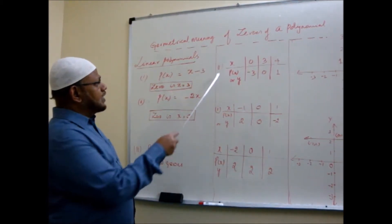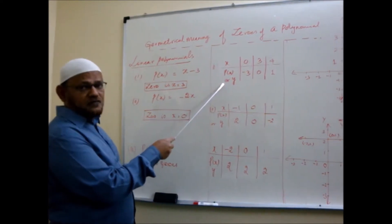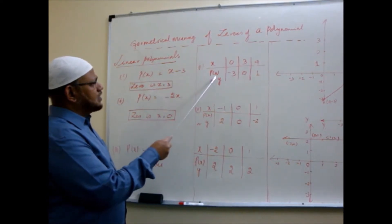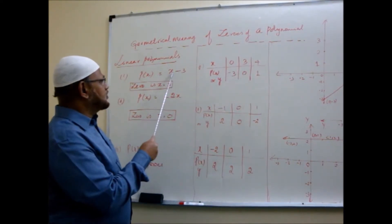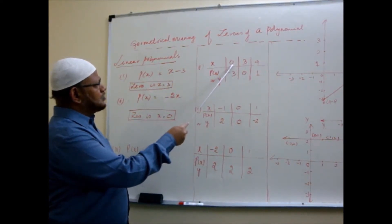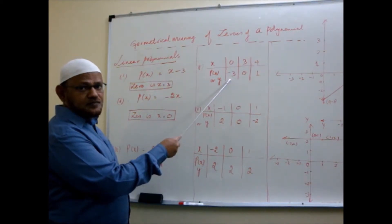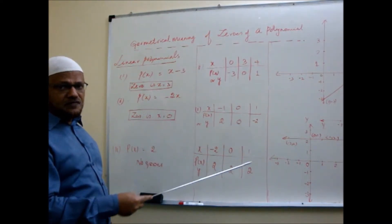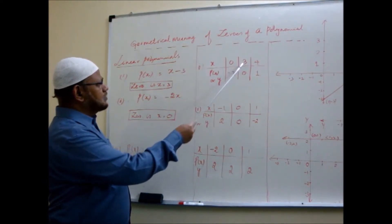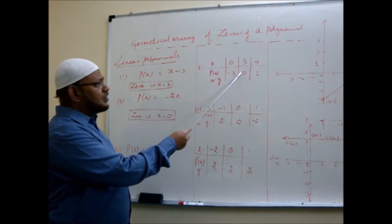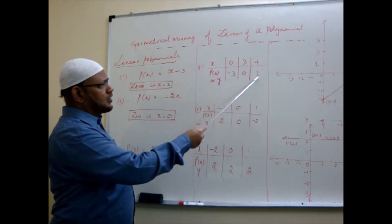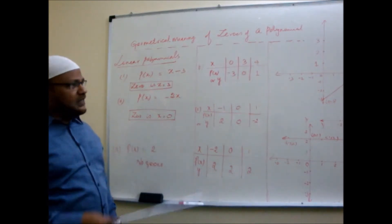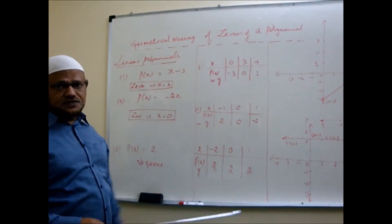We consider p(x) as y. So y = x - 3. We treat this as y = x - 3 — it's like a linear equation in two variables as studied in class 9. I write x here and p(x) — meaning y — here. I give some values for x and write the corresponding values of y by substituting. If I put x = 0, I get y = -3. If x = 3, I get y = 0. If x = 4, I get y = 1.